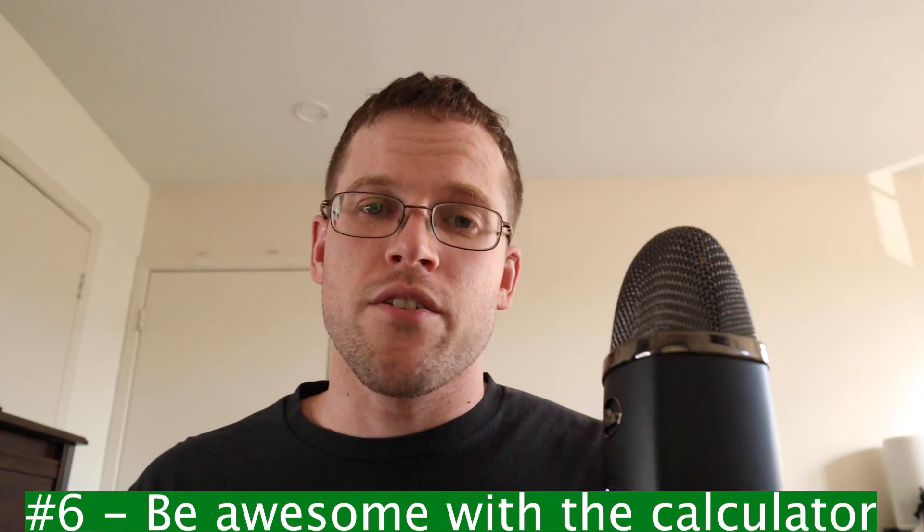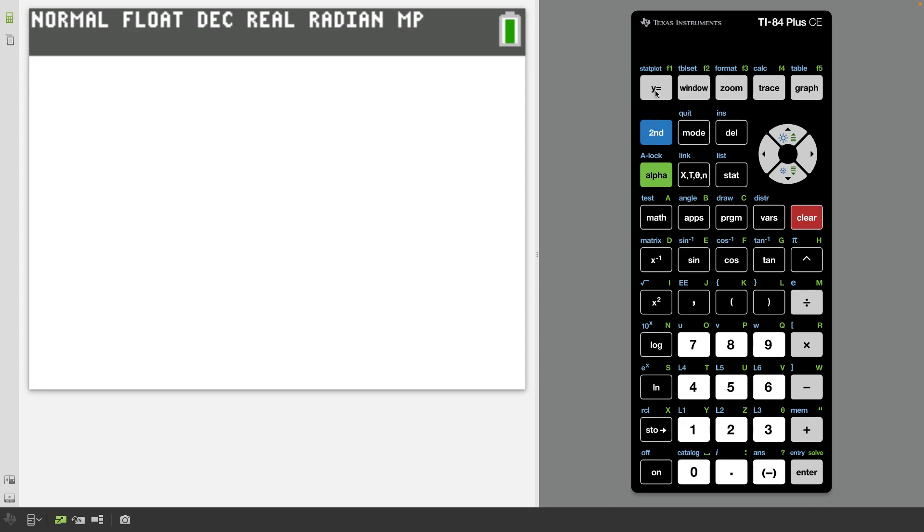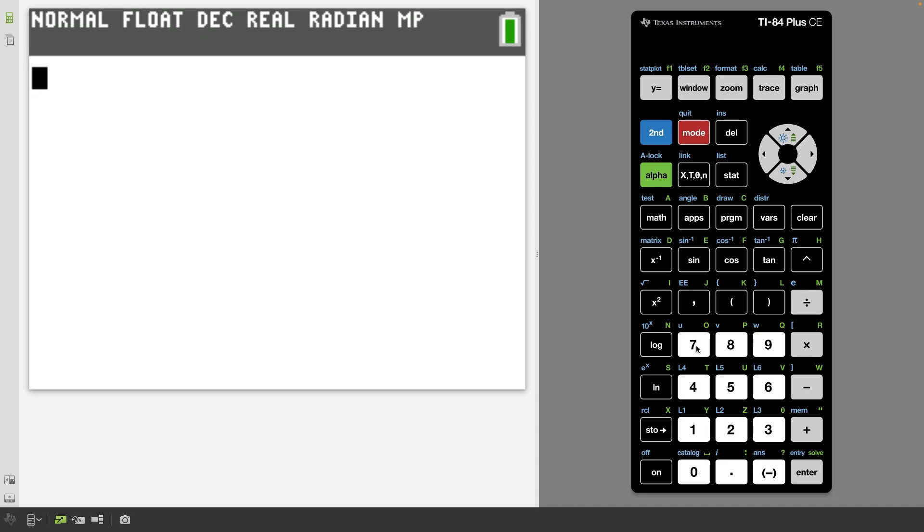Tip number six, be awesome with the calculator. So for this exam, you get to use a calculator for two of the sections. And let's say y equals or f of x is equal to some massive function here. And you have to take a derivative of this. Please do not spend 30 minutes doing quotient rule, chain rule, product rule, and all that stuff. If you had to take a derivative of that function, just press math 8 and it pulls up the derivative.